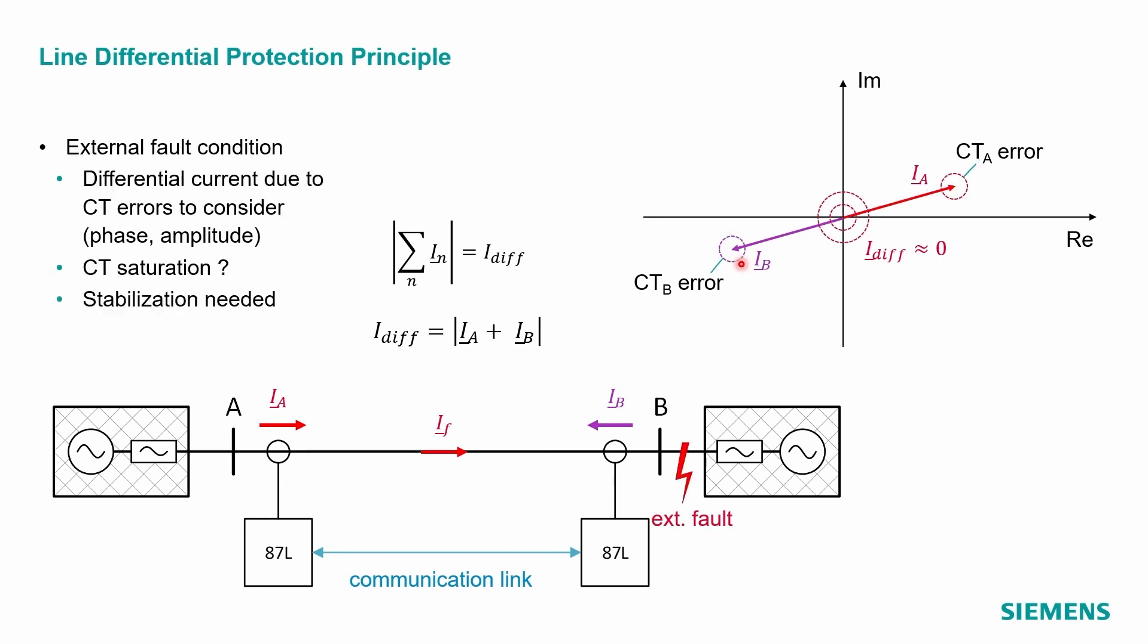This is particularly the case if you have an external fault situation. The measured currents at the line terminals are the through fault currents. The higher currents result in bigger CT errors and therefore a higher differential current. For this reason, we need a minimal pickup threshold for the differential current setting. In extreme situation, one CT could saturate and the apparent differential becomes very big. For this, we need other types of stabilization, which I will present later to you.